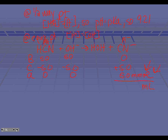We initially started with 50 milliliters of acid. How much base did we add? We know we had 5 millimoles of base and its concentration was 0.1 molar. The milliliters equals the millimoles divided by the molarity: 5 divided by 0.1 gives us 50 milliliters. So 5 millimoles in 100 milliliters total gives us a new concentration of 0.05 molar cyanide, our A minus.